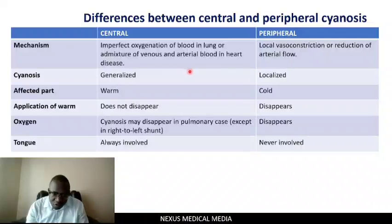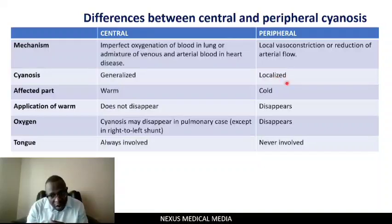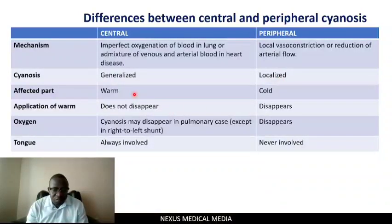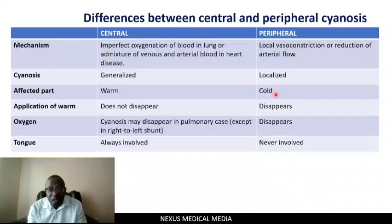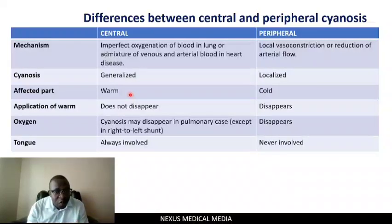Looking at the cyanosis in general: central cyanosis is generalized and peripheral is localized. Looking at the affected parts — if you touch the patient in central cyanosis, this patient will be warm, and in peripheral cyanosis this patient will be cold, because there is a reduction in arterial blood flow. In central cyanosis, the blood flow is fine but oxygenation is the issue.